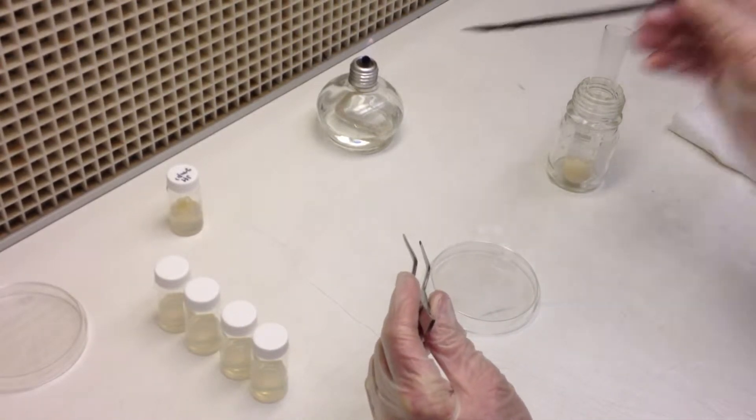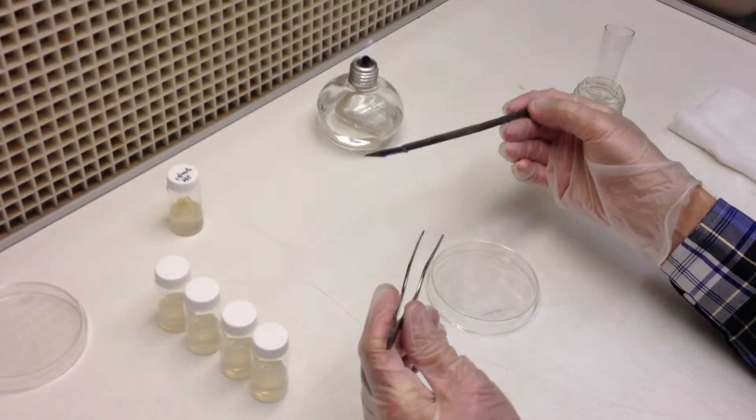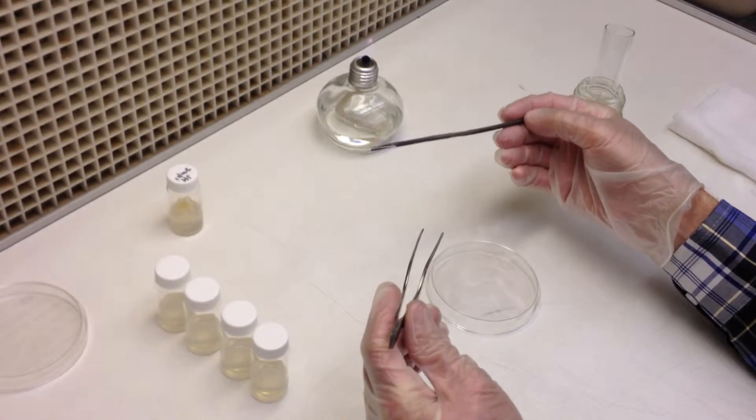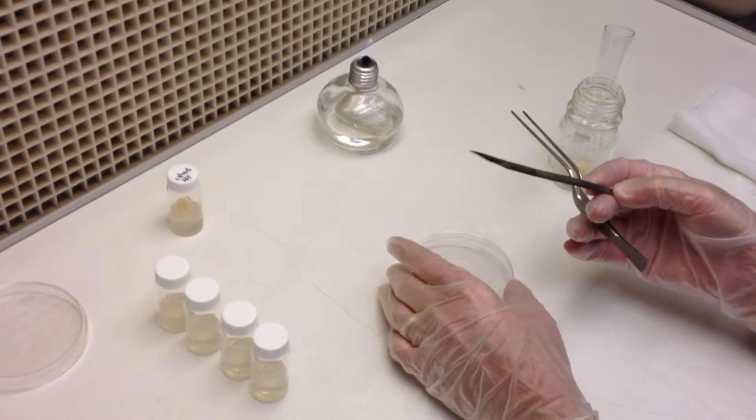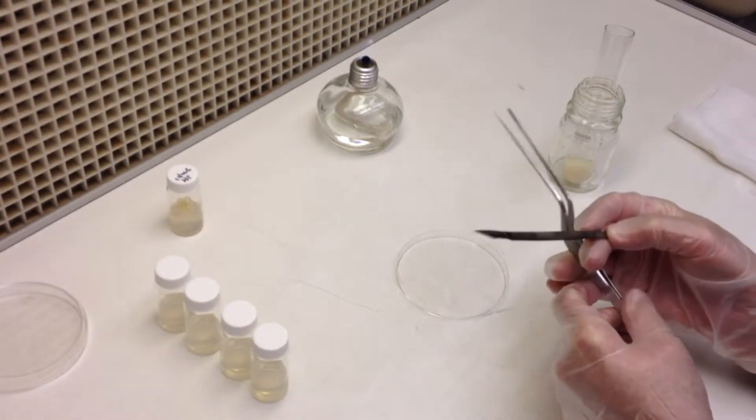So here we're flaming the forceps, flaming the scalpel. We're going to be cutting up the callus into the plastic Petri plates. And I recommend using the lid, although you can use the base if you like.